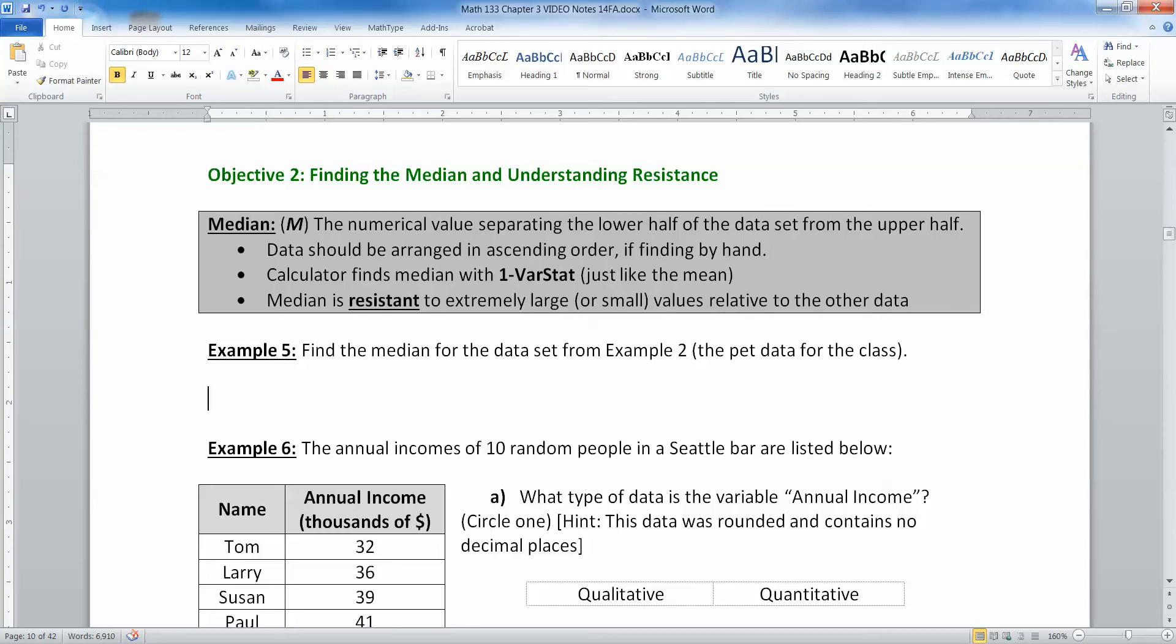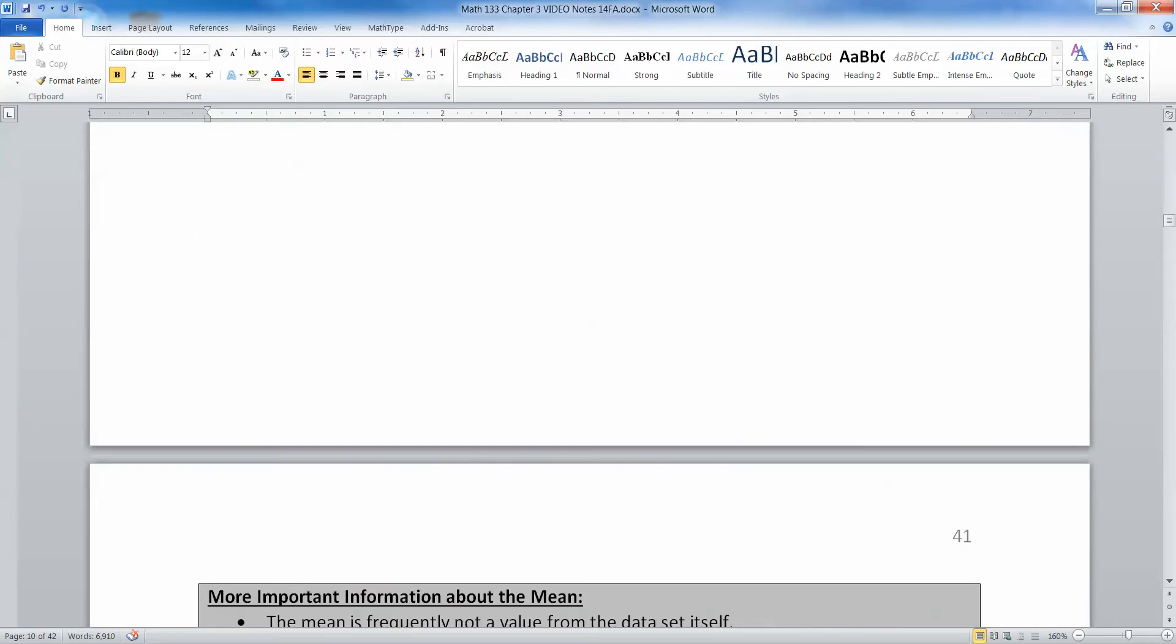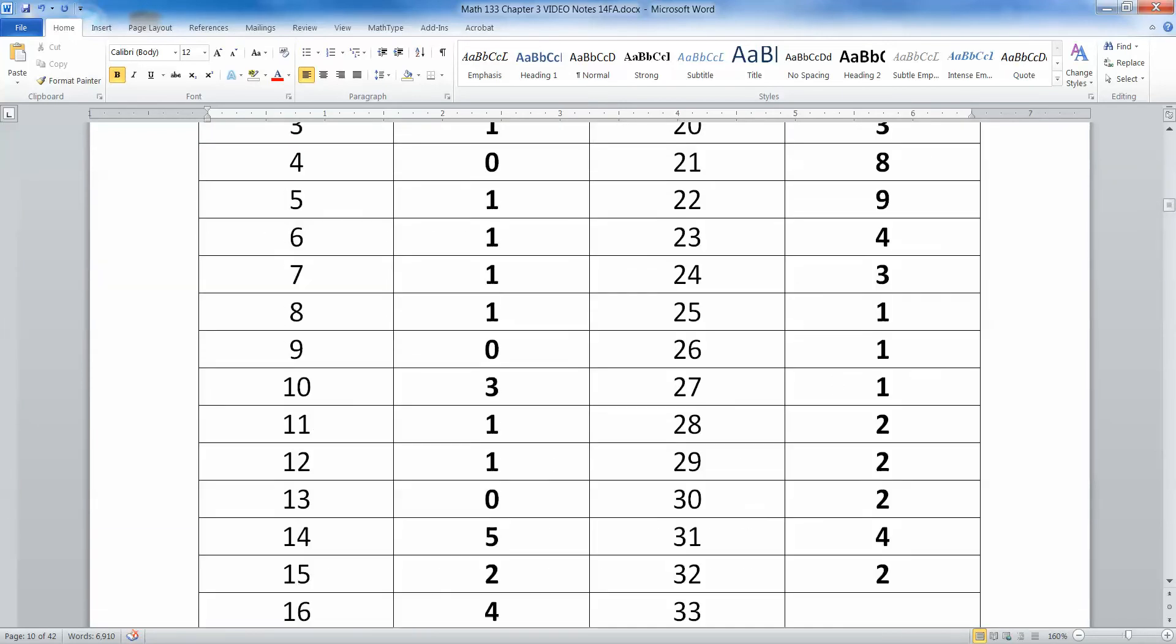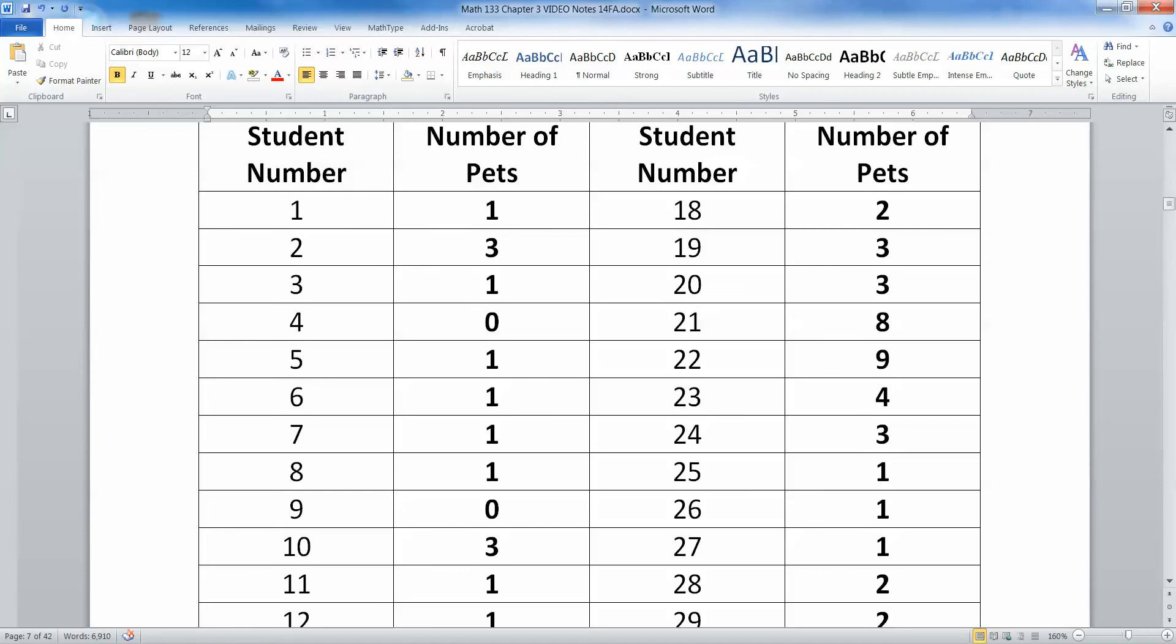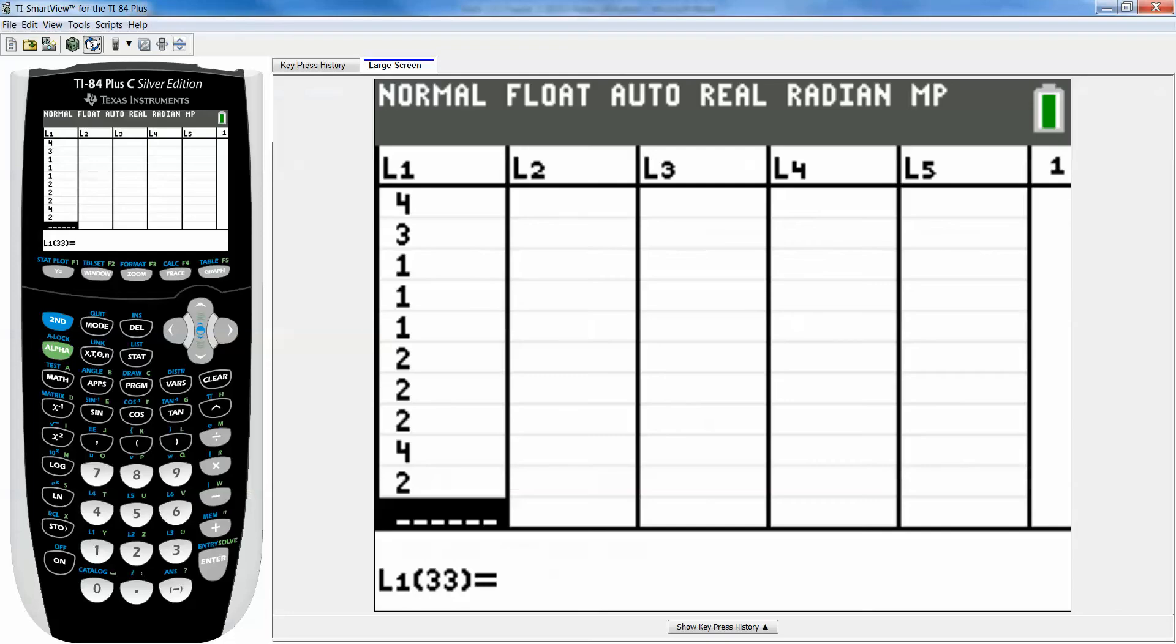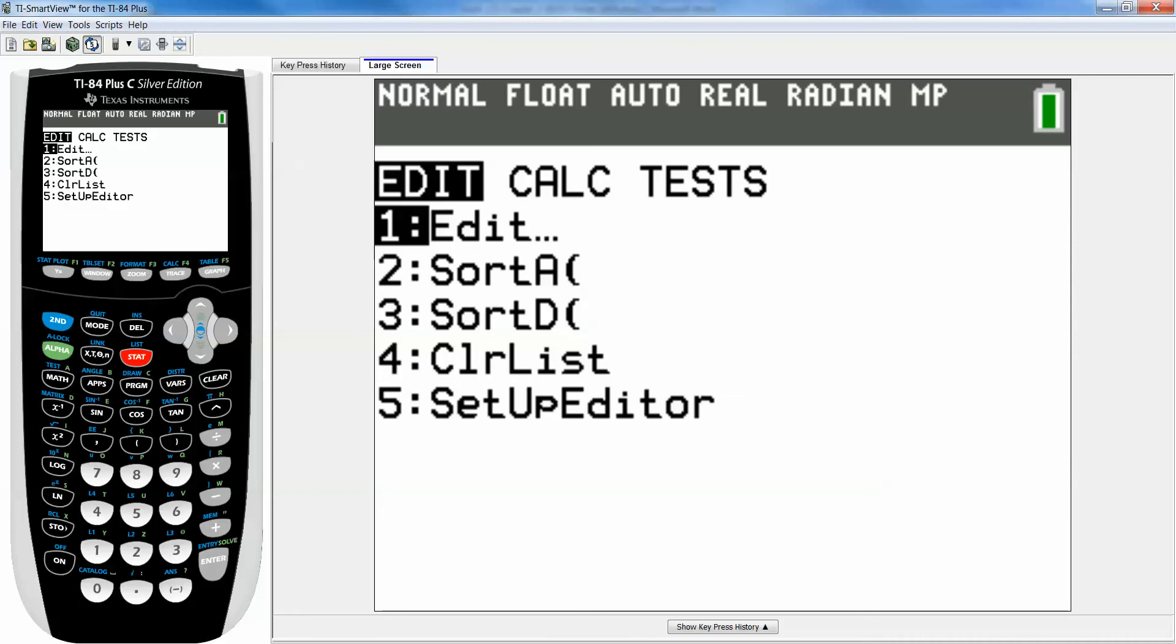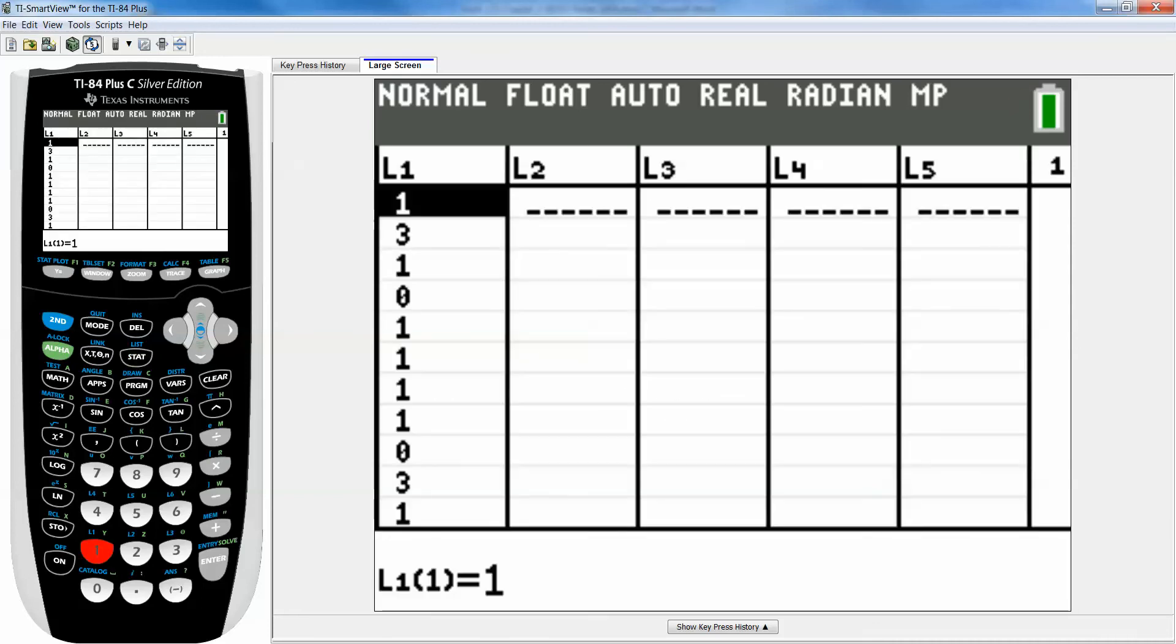So the first thing we're going to do is find the median for the data set from example two. If you remember we have this list of the number of pets that people have in the class. To find the median you would go to STAT and either 1 or enter either way because it's already highlighted.